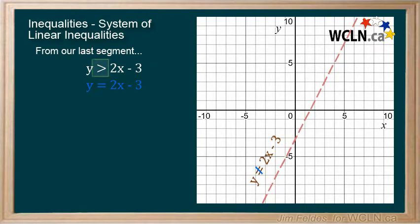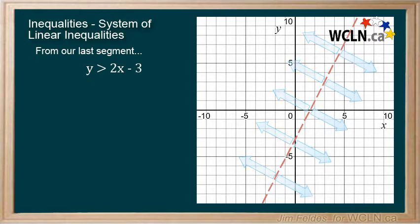Our example doesn't include equal to. Another advantage of the standard form is that it allows us to use the direction of the inequality sign to quickly determine if our solution lies above or below the line, without having to test points on each side.